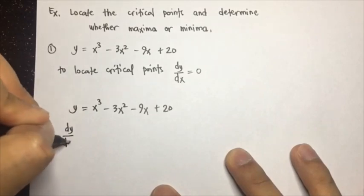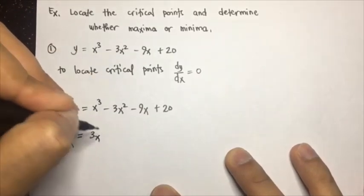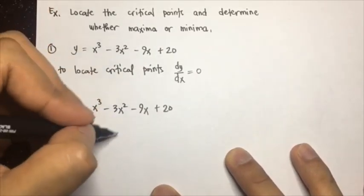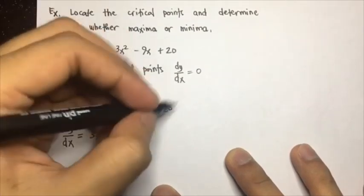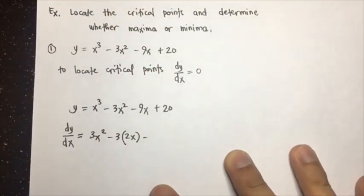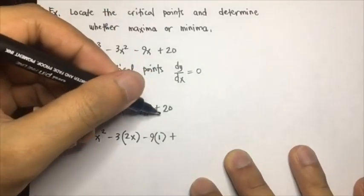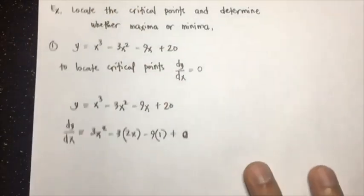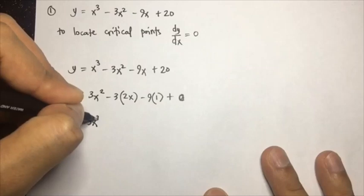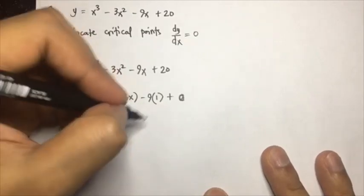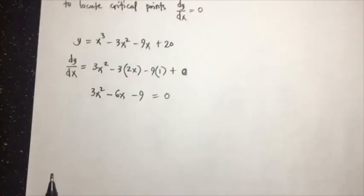So we have y = x³ - 3x² - 9x + 20. Finding the derivative: dy/dx = 3x² - 3(2x) - 9 = 3x² - 6x - 9. Simplifying and setting this equal to zero gives us 3x² - 6x - 9 = 0.